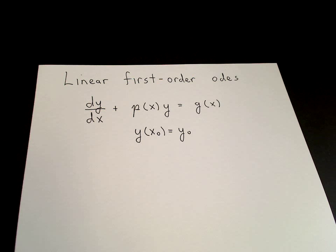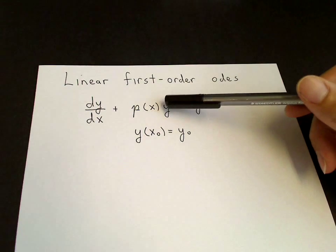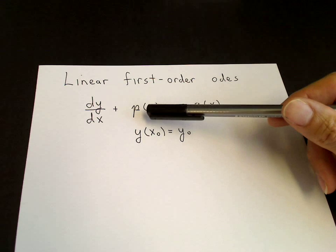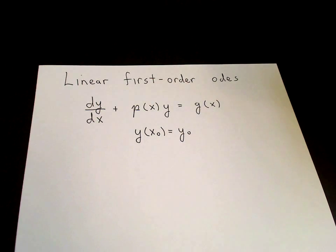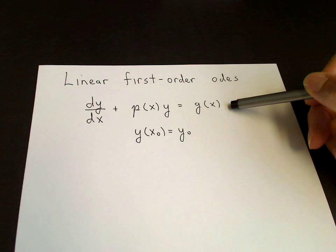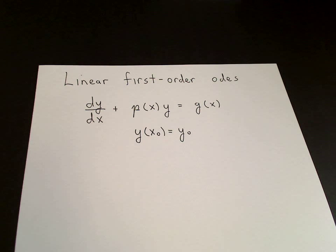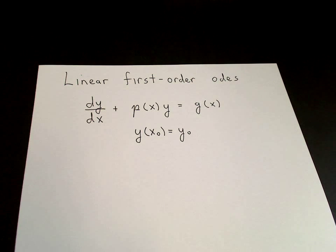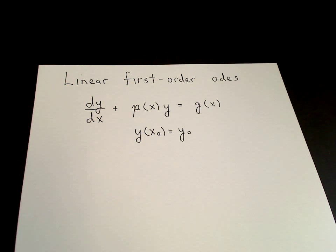In this video I'll teach you how to solve linear first-order ODEs. By linear, it means it's linear in y. So you have the dy/dx term and a term linear in y, which can be multiplied by any function of x. So p(x) can be a non-linear function of x, equals a right-hand side g(x), which can also be a non-linear function of x. So p(x) and g(x) are given in a specific problem, and the initial condition is y(x₀) = y₀. The nice thing about linear first-order ODEs is that there's an exact closed-form solution, and in this video I will show you how to find that solution.